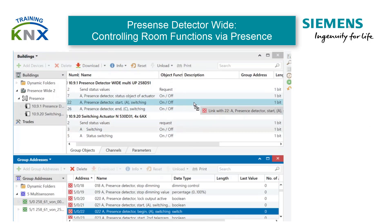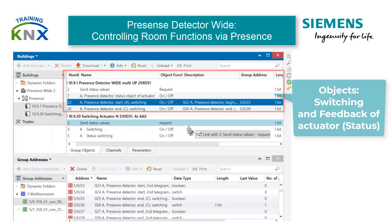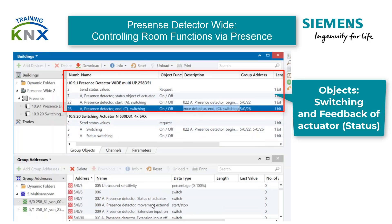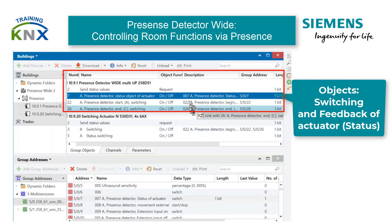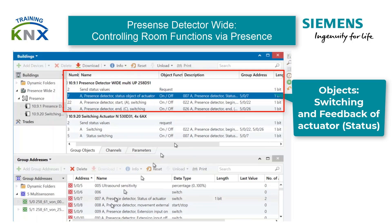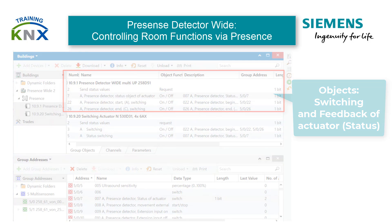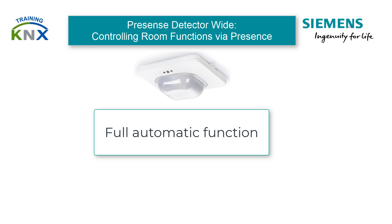It is sufficient to use it with only one group address. If a status message from the controlled actuator is available, it is useful to link it to Object 7, Status of Actuator. In conjunction with the evaluation time of the status feedback object, this can be used to ensure that the Presence Detector cannot immediately send an on-telegram again, even if lighting is switched off manually. Here we are finished with the configuration of the fully automatic, Presence Dependent Switched Lighting Control.